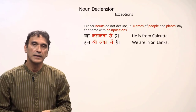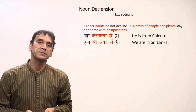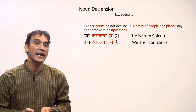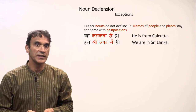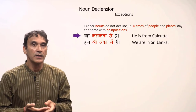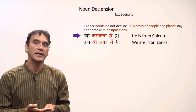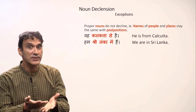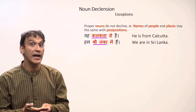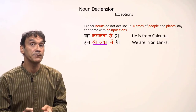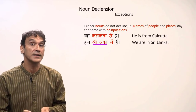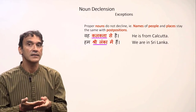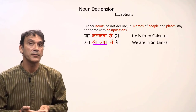There are some exceptions to this rule. Proper nouns — names of people and places — do not change; they stay the same. 'Wo Kolkata se hai' — he is from Kolkata. 'Hum Sri Lanka mein hain' — we are in Sri Lanka. In these sentences, 'Kolkata' and 'Sri Lanka' end in 'a' and have postpositions, but they still do not change because they are proper nouns.